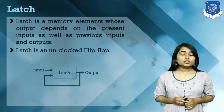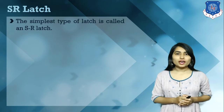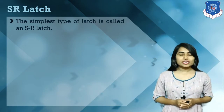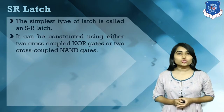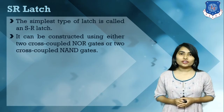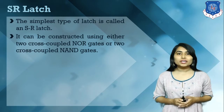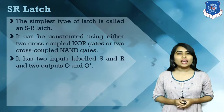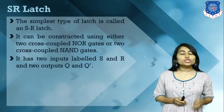So let's discuss various kinds of latches. First, we have the SR latch. The SR latch is basically the simplest type of latch. Using this SR latch, we can store 1 bit of data. This SR latch is constructed using two cross-coupled NAND gates or using two cross-coupled NOR gates. In the SR latch, we have two inputs known as S and R, and we have two outputs Q and Q'.